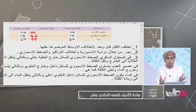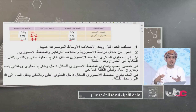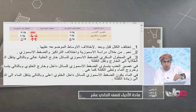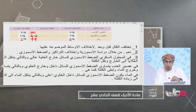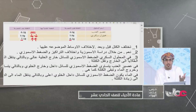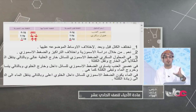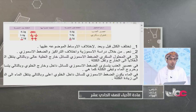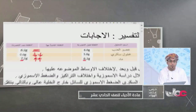أما في عصير العنب فيتساوى الضغط الإسموزي للسائل في الداخل وفي الخارج، لأن داخل العنب وخارجه يحتويان على سائل من العنب. لذا لن تتغير الكتلة إلا تغيراً بسيطاً لا يُذكر. إذن في عصير العنب التركيز داخل وخارج العنب متساوٍ، فمحصلة التدفق ستكون صفراً.